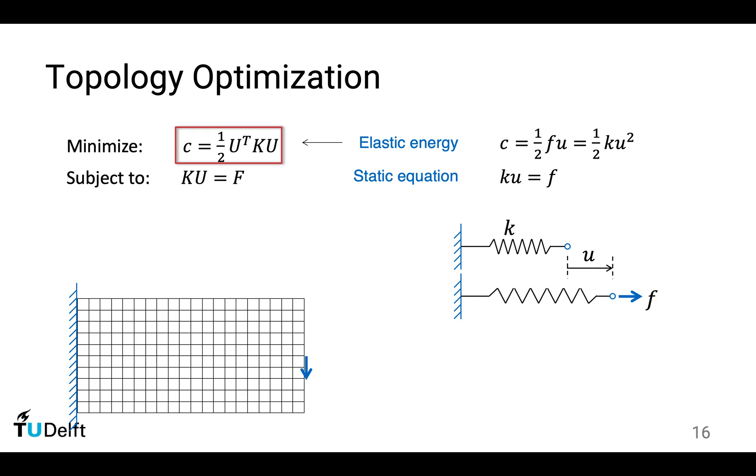There are a few constraints. The first constraint is regarding the static equilibrium equation ku equals f. U and f are capitalized to indicate a continuum is a vector composed of the displacement of every vertex and the force applied to every vertex in the domain. Again, the same meaning for the spring.